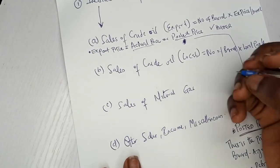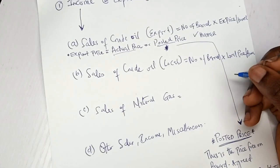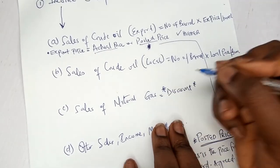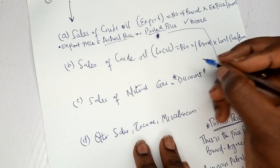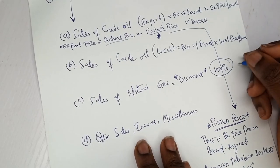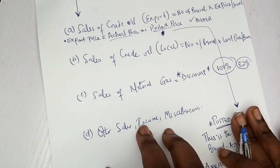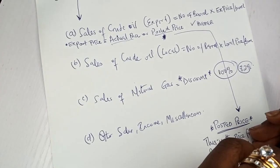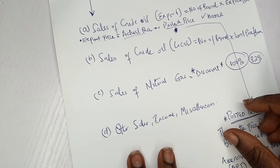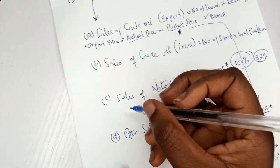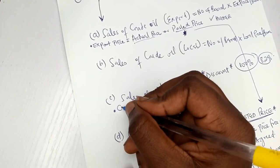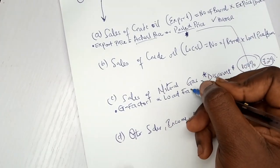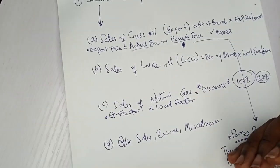For sale of natural gas — whenever you see natural gas, always think of a discount. It must be reduced, because gas leaks in transit. If you sell 50 kg, by the time it arrives it might only be 48 kg. This introduces two concepts: the G factor (gas production cost adjustment factor) and the load factor. These must be understood before solving questions.